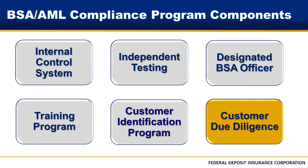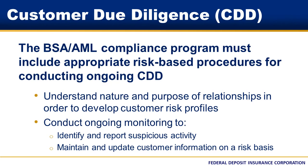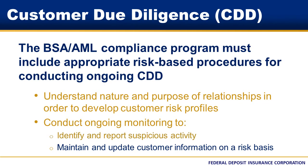The final component of a bank's BSA AML compliance program is implementation of the Customer Due Diligence, or CDD, component. Banks have been performing customer due diligence for many years. FinCEN issued regulations requiring banks to perform ongoing CDD and to identify and verify beneficial owners of a legal entity customer. The BSA AML compliance program must include appropriate risk-based procedures for conducting ongoing CDD. Procedures must be designed to understand the nature and purpose of customer relationships to develop customer risk profiles. Additionally, the procedures must provide for ongoing monitoring to identify and report suspicious activity and to maintain and update customer information on a risk basis.